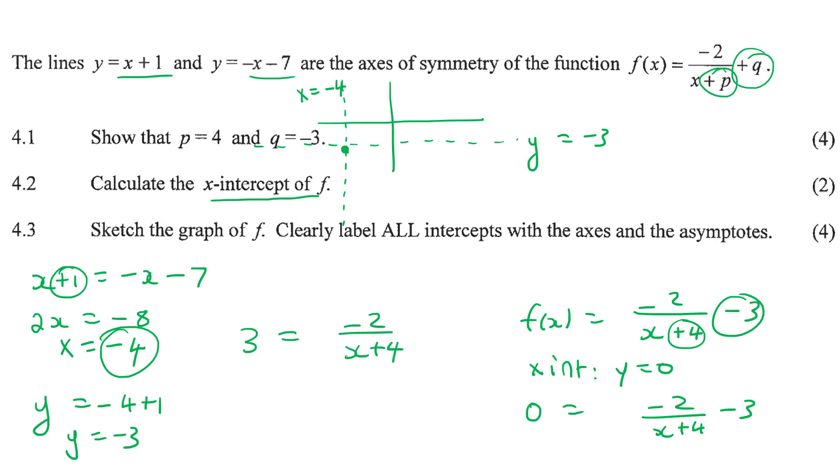Then I just want you to cross multiply. So you're going to multiply this up to the top. Like that. Multiply the 3 in. And then take the 12 over to the other side, where it will become negative 14. And so x would be equal to negative 14 over 3. So x is negative 14 over 3.